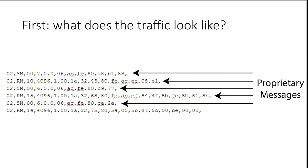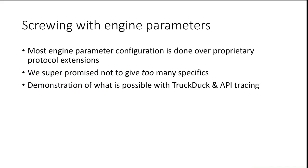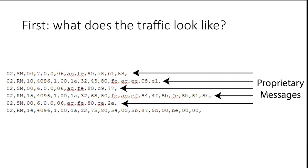We promise not to give too many specifics so you can't do very bad things to trucks on the road — that would be pretty dangerous. We're going to give a demonstration of what is possible with the TruckDuck and the RP1210 tracer. This is some proprietary traffic — you can see the messages here. The 'FE' in the middle indicates this is a proprietary message, and that's what you really want to look for. The message at the bottom is just something regular flowing across the bus.